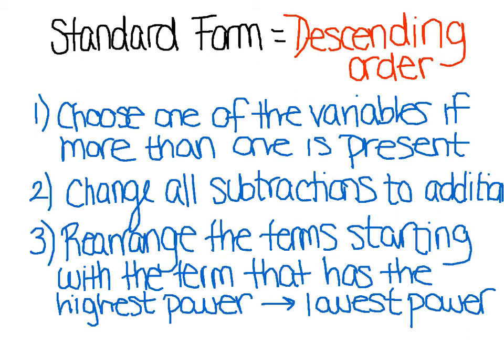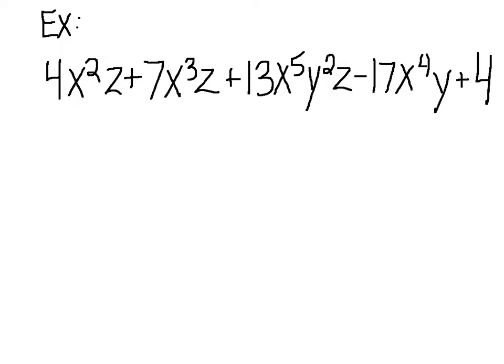So the best way to look at this is to look at an example, which we're going to look at at the next slide. Alright, we're given 4x squared z plus 7x cubed z plus 13x to the fifth y to the second z minus 17x to the fourth y plus 4. It's very complicated. We want to put it in descending order.